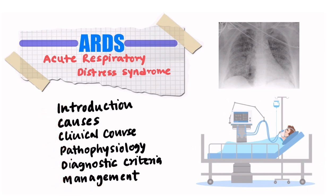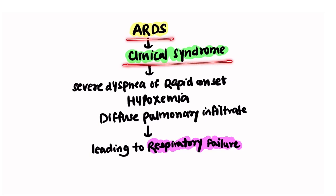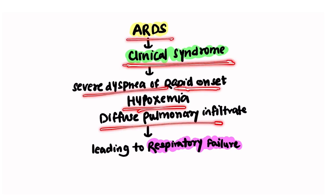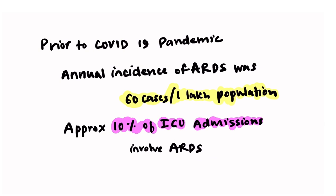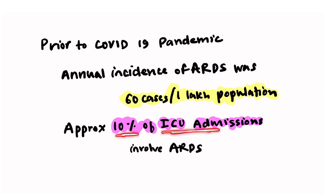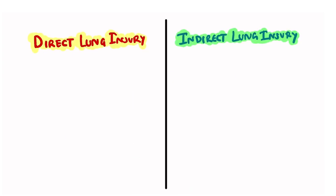ARDS is a clinical syndrome characterized by severe dyspnea of rapid onset, hypoxemia, and diffuse pulmonary infiltrates, all leading to respiratory failure. Prior to the COVID-19 pandemic, the annual incidence of ARDS was 60 cases per lakh population, and approximately 10% of ICU admissions involved ARDS.